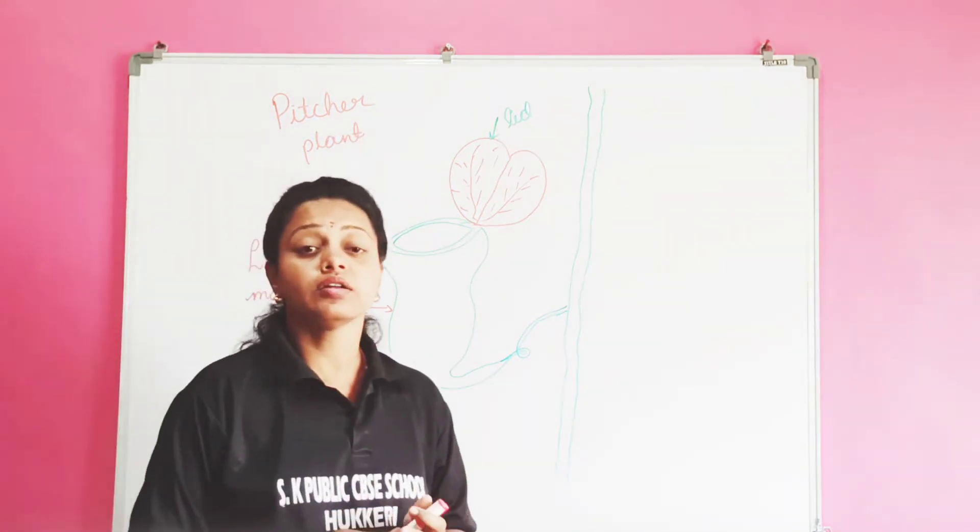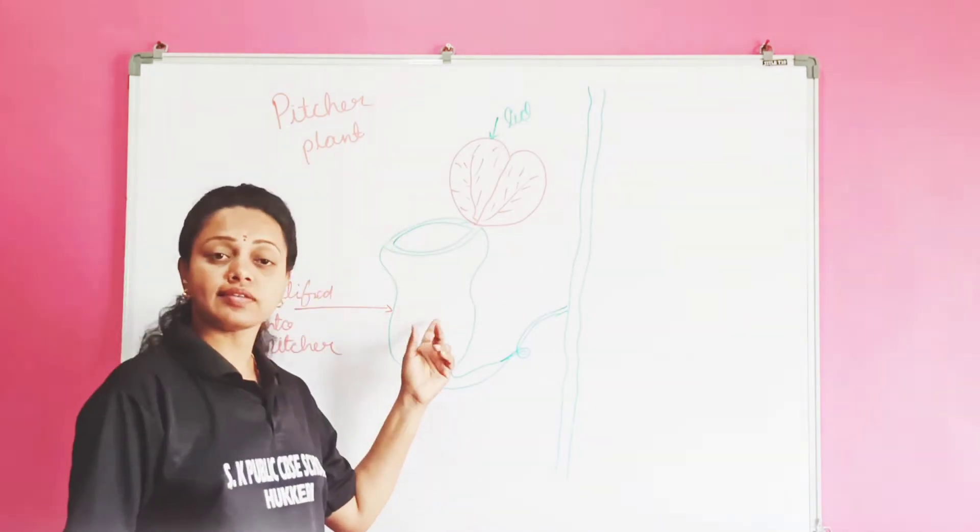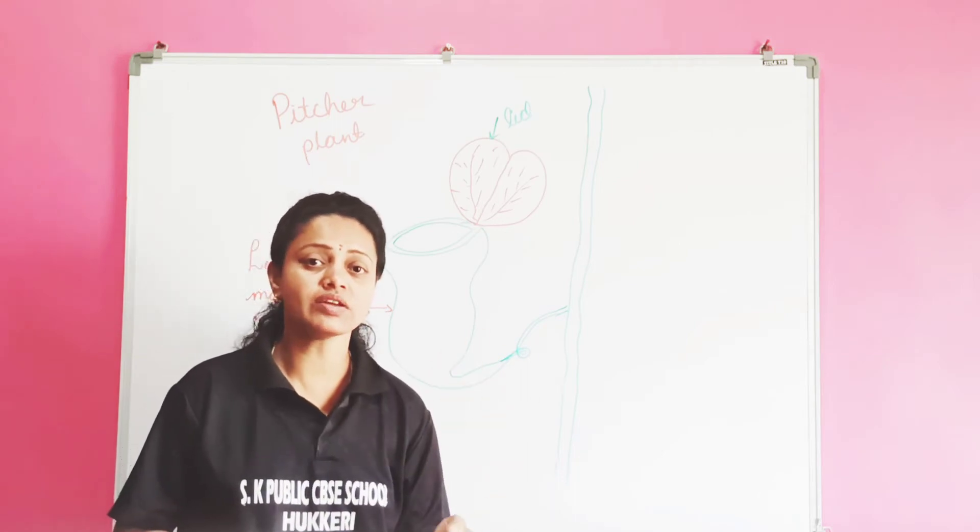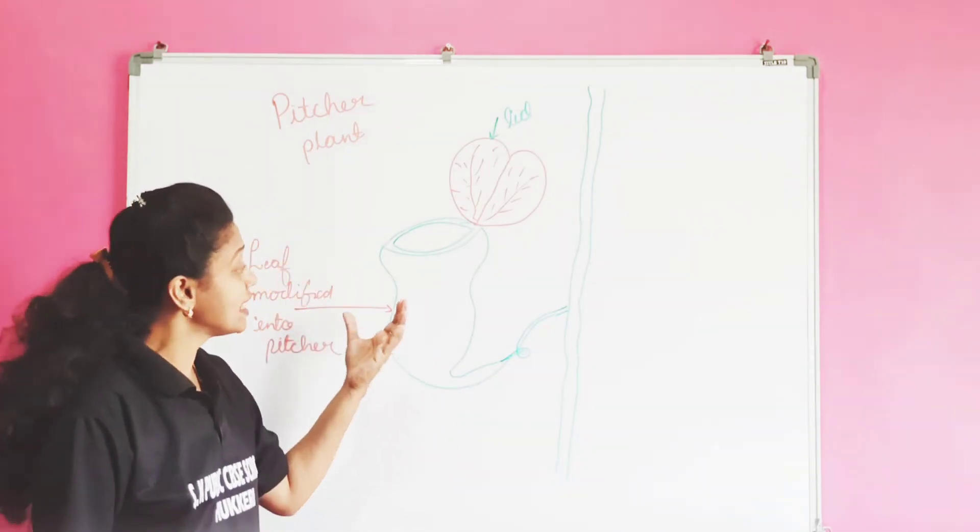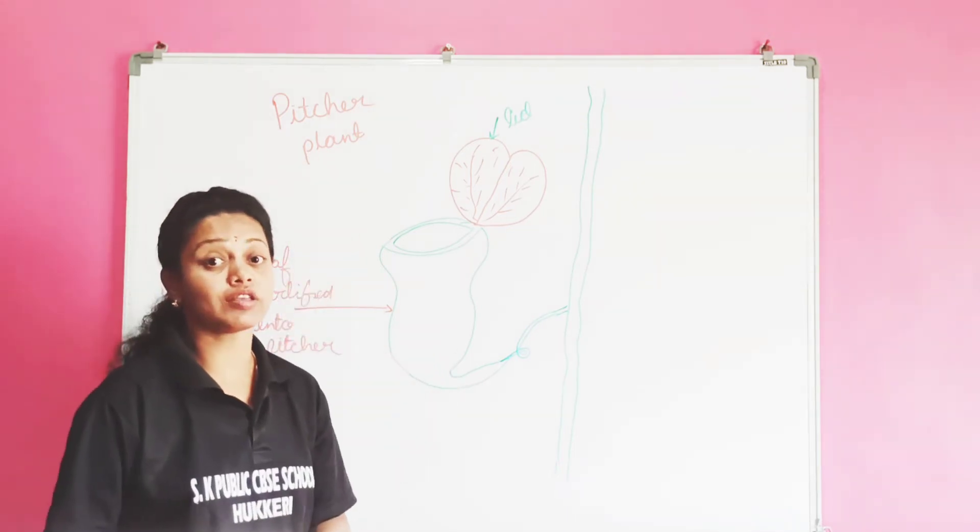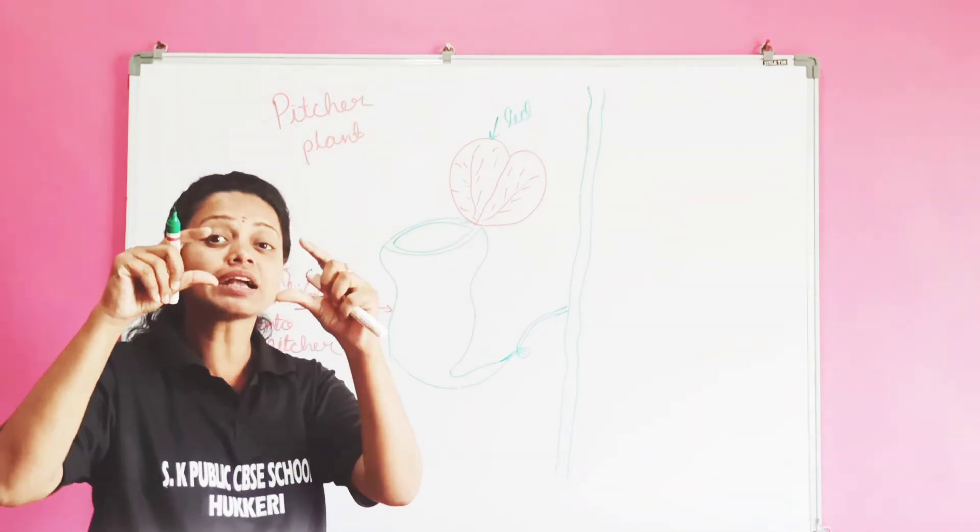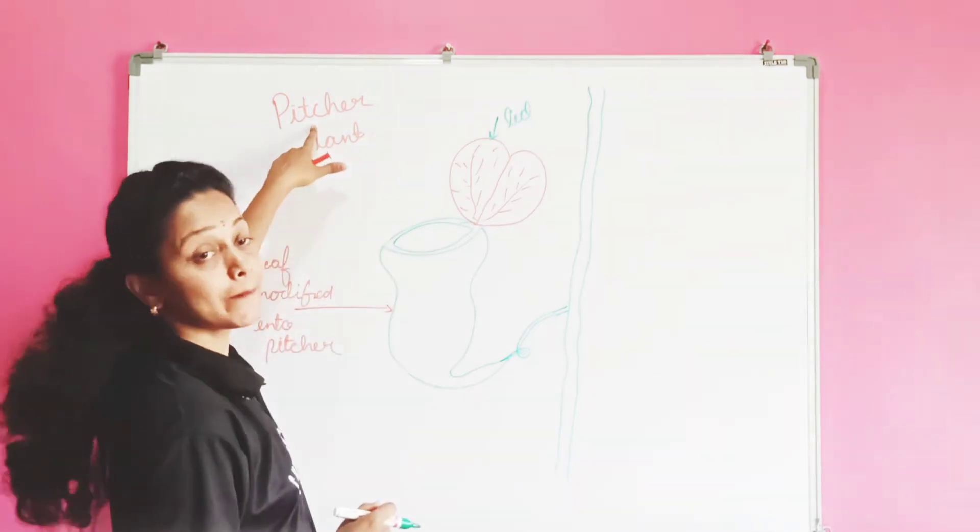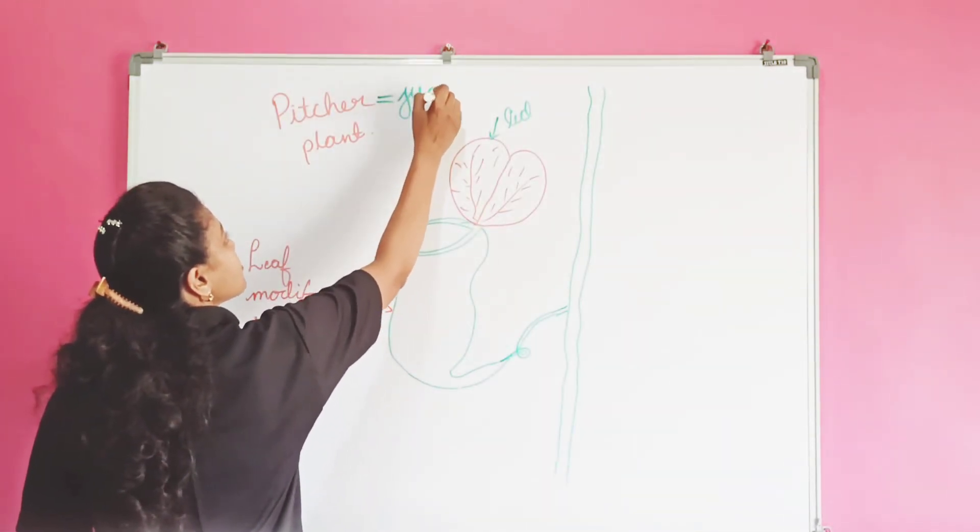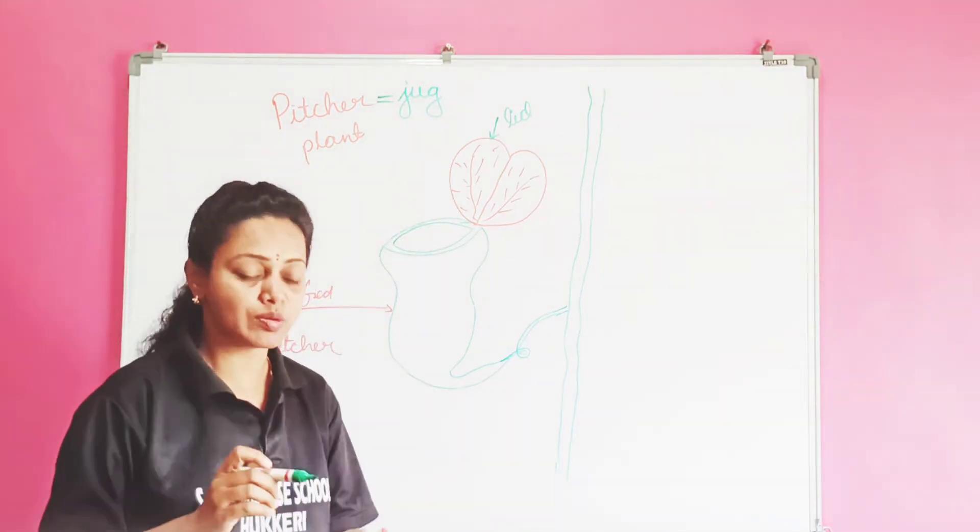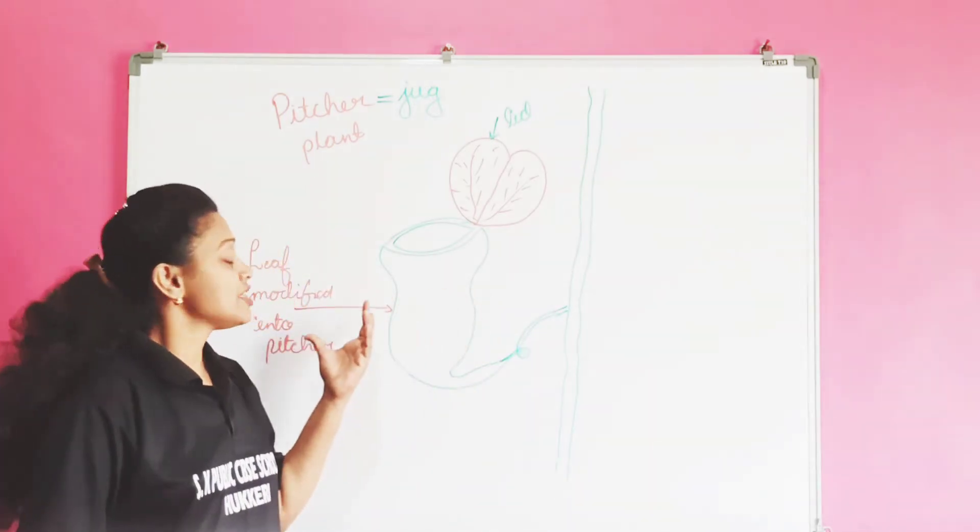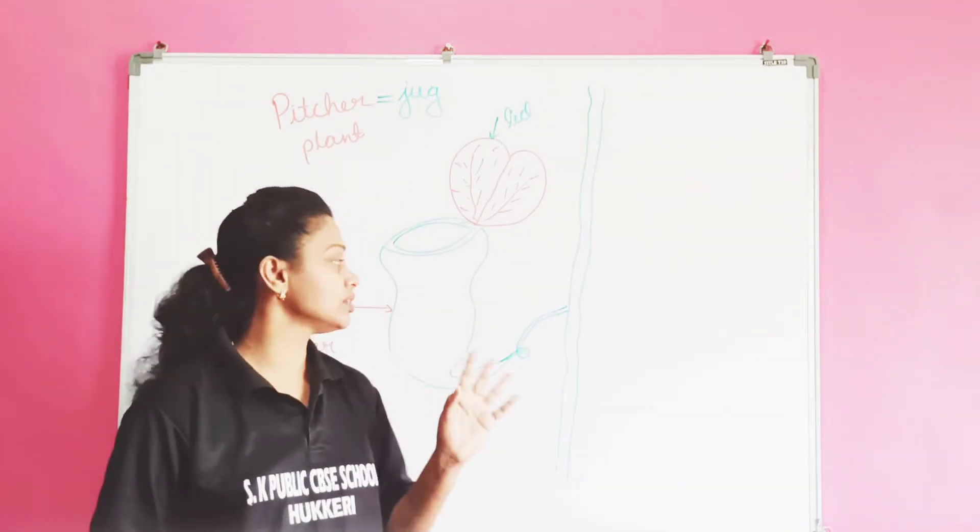Pitcher plant. You know children, here actually this is a leaf. How normally our plant has the leaf? Same leaf it is there. But here the leaf is modified into a pitcher. What is pitcher? Pitcher means a jug-like structure. Pitcher structure is a modified part of the leaf here.